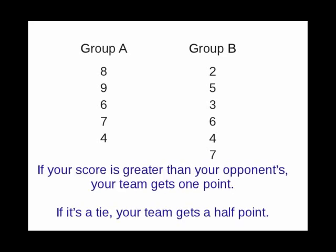The Mann-Whitney test compares every score from one team against every score from the other team. If your score is greater than your opponent's, your team gets one point. If it's a tie, your team gets a half point.